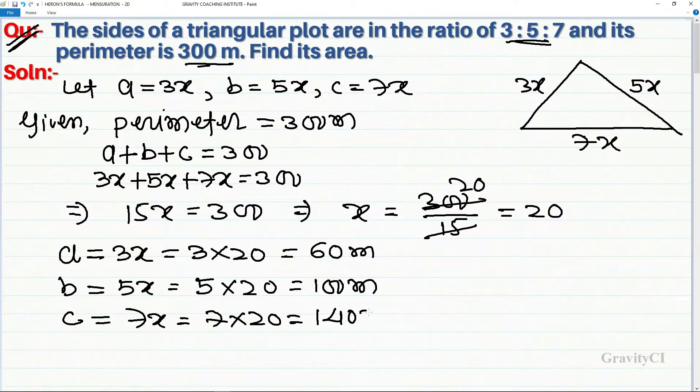c equals 140 meters. Now we have to find the area of this plot. We will use Heron's formula.